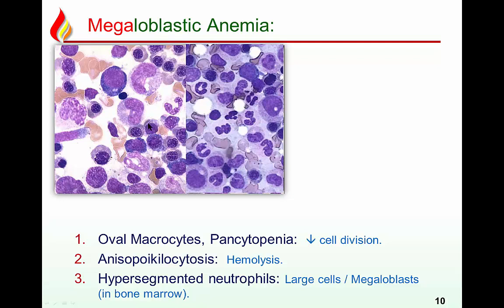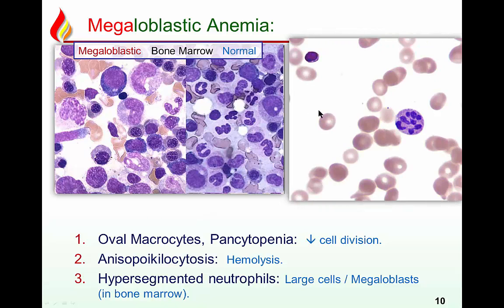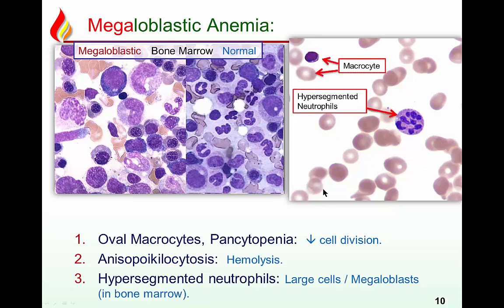The marrow is called megaloblastic — large blast cells due to defective DNA synthesis — resulting in big RBCs. Compared to the lymphocyte, RBCs are much larger, and because hemoglobin is otherwise normal, they are normochromic. They are typically oval — oval macrocytes. WBCs are also big, with hypersegmented neutrophils (normally 3-4 lobes; here markedly hypersegmented). Overall you see fewer RBCs, fewer platelets, and fewer WBCs — pancytopenia. Summary: macrocytic normochromic RBCs, hypersegmented neutrophils, and pancytopenia.